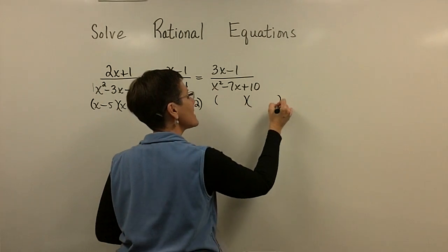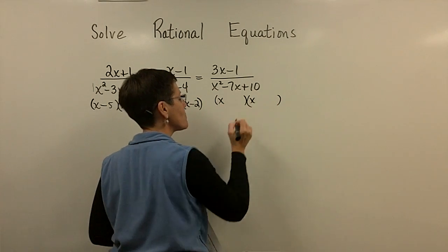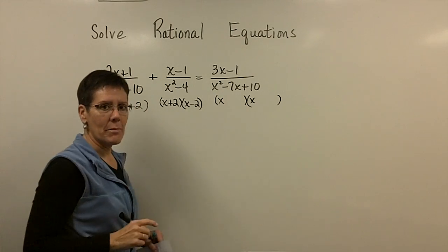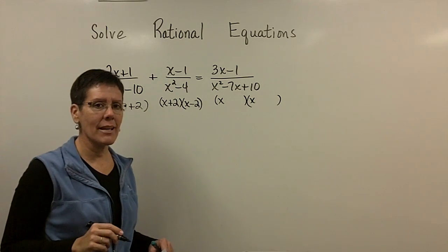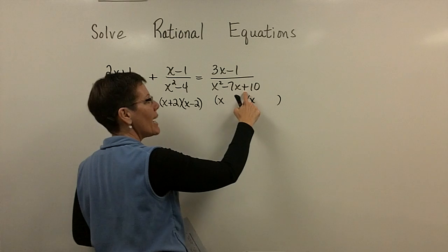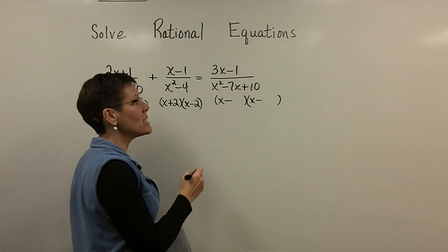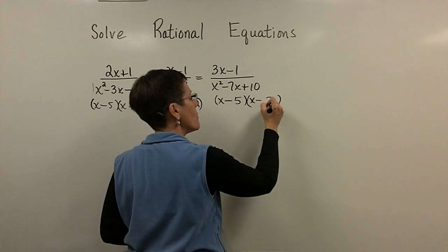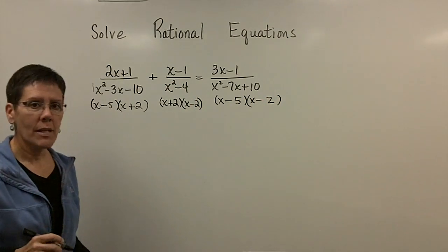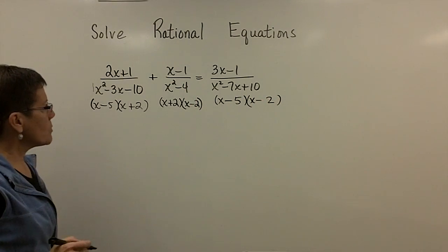Over here now, I'm looking for two numbers whose product is positive 10 and adds to be minus 7. Their signs have to be the same for them to multiply to be positive 10, so they better both be negative. They need to add to be negative 7, so better use minus 5 and minus 2.